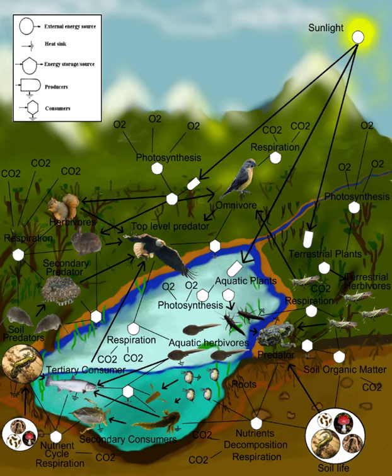Many theoretical ecologists, including Sir Robert May and Stuart Pimm, were prompted by this discovery and others to examine the mathematical properties of food webs.